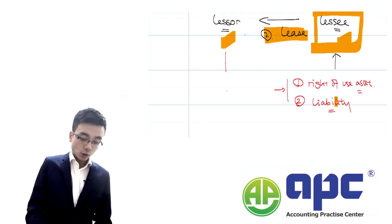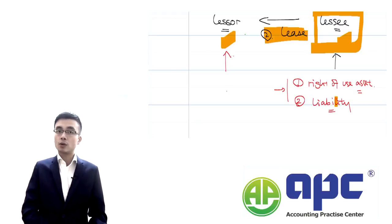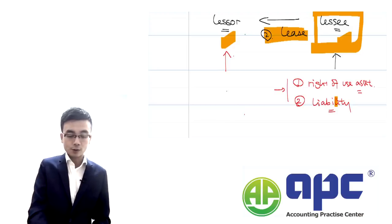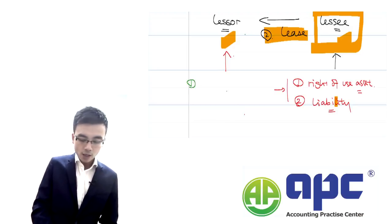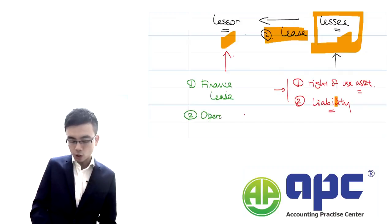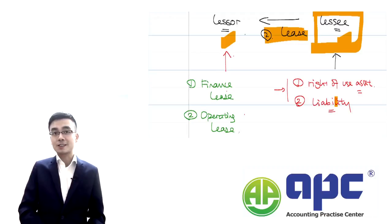From the lessor's point of view, on the other hand, it will be the same as what we've seen in the old accounting standard, IAS 17 lease accounting. That means from the lessor's point of view, we're going to identify the circumstances where the transaction is a finance lease or perhaps just an operating lease. The accounting treatment will be different in these two circumstances.